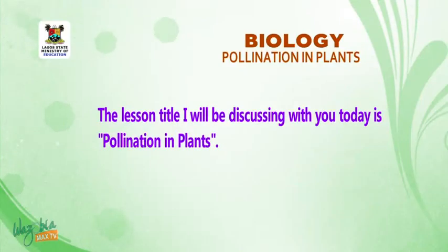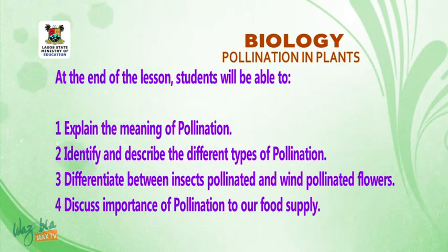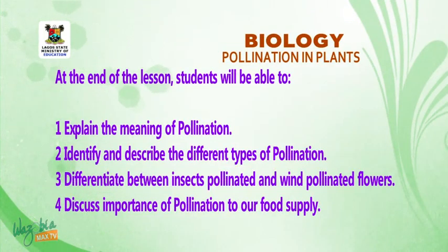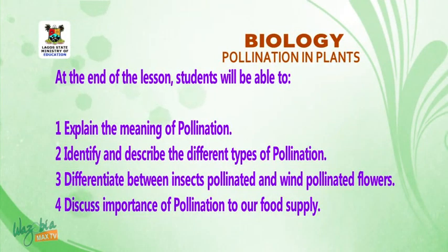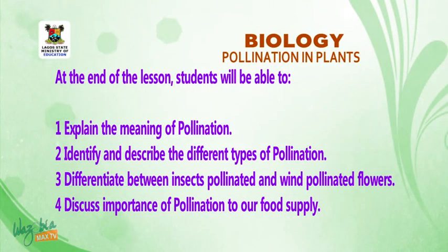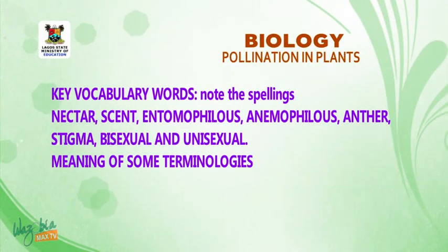At the end of this lesson, students will be able to: 1. Explain the meaning of pollination. 2. Identify and describe the different types of pollination. 3. Differentiate between insect-pollinated and wind-pollinated flowers. 4. Describe the importance of pollination to our food supply. Now let us enjoy the lesson together.